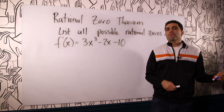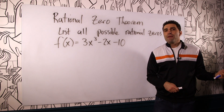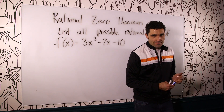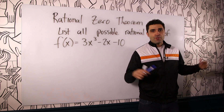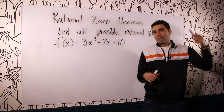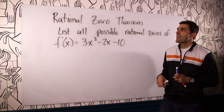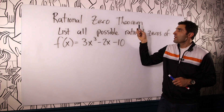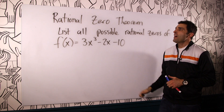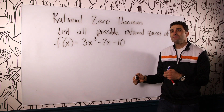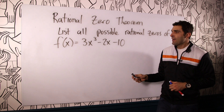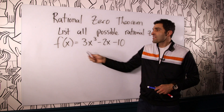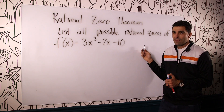Hello everyone, I'm Robert Ardut with yaymath.org. Welcome back to Yay Math in Studio in this beautiful studio space with my friend Zach behind the camera. Today we're going to be talking about the Rational Zero Theorem. It's kind of an interesting rule and once you understand it, it'll help guide you in how to solve polynomials like this.